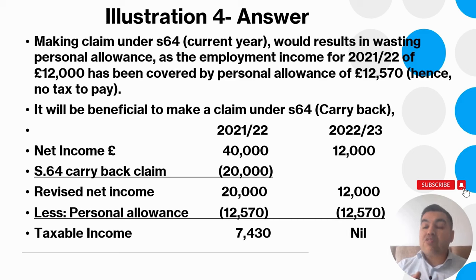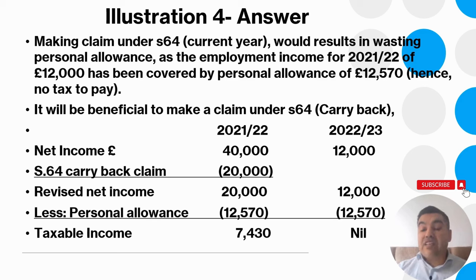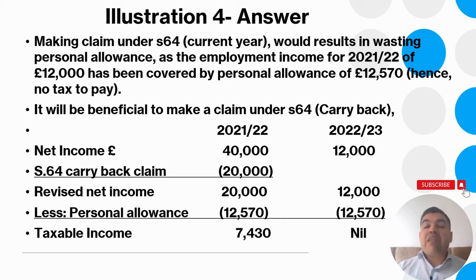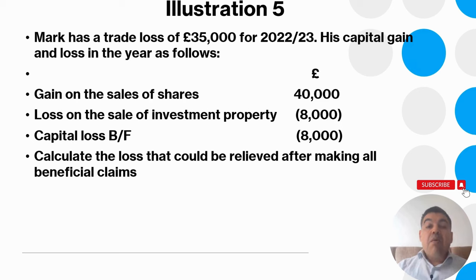Making a current year claim would result in wasting the personal allowance since her £12,000 wages are covered by it. By carrying back the losses under s64 to the previous year, Sally efficiently utilizes the losses while still preserving her personal allowance. The revised net income for the previous year is reduced to £20,000. After applying the personal allowance, her taxable income for one year is £7,430 and for 2022-23 is nil.